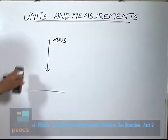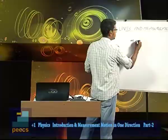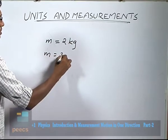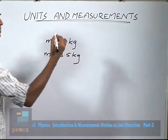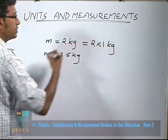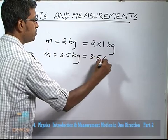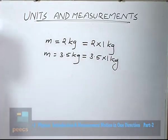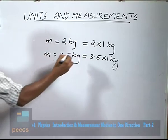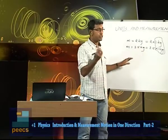Now take the example of mass. I am saying that the mass of an object is 2 kilogram, so I will write M equal to 2 kilogram, or M equal to 3.5 kilogram. 2 kilogram means 2 into 1 kilogram, and 3.5 kilogram means 3.5 into 1 kilogram. So here the physical quantity mass is being compared with 1 kilogram — this is the reference standard used in measurement, and that is nothing but a unit.